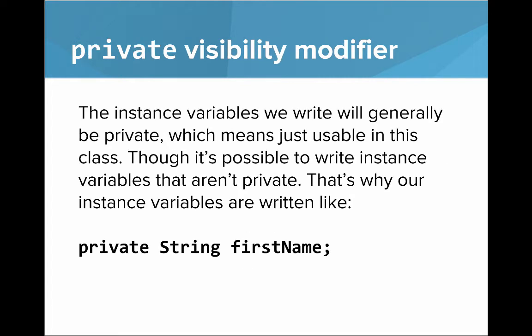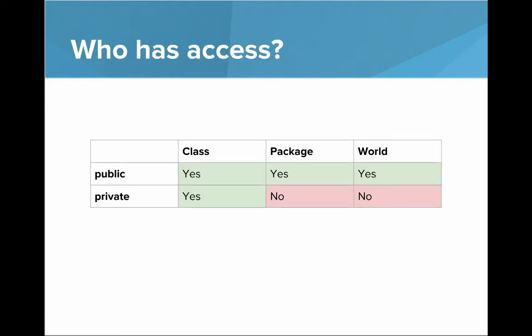The private visibility modifier. The instance variables we will write will generally be private, which means just usable by this class, though it's possible to write instance variables that aren't private. That's why our instance variables are written like private String firstName. That's only accessible within the class.